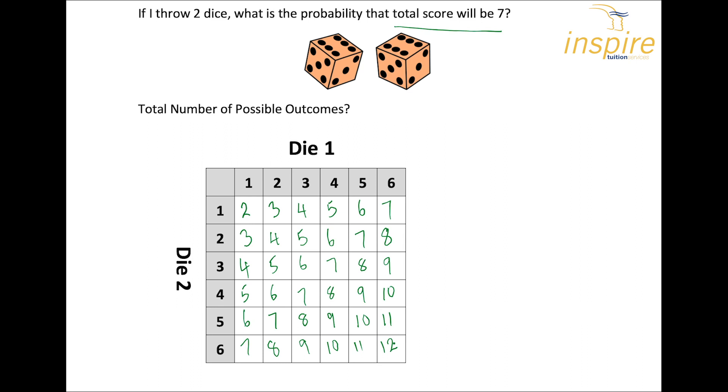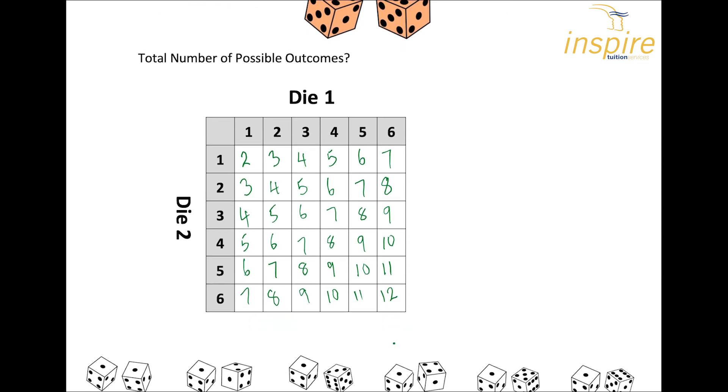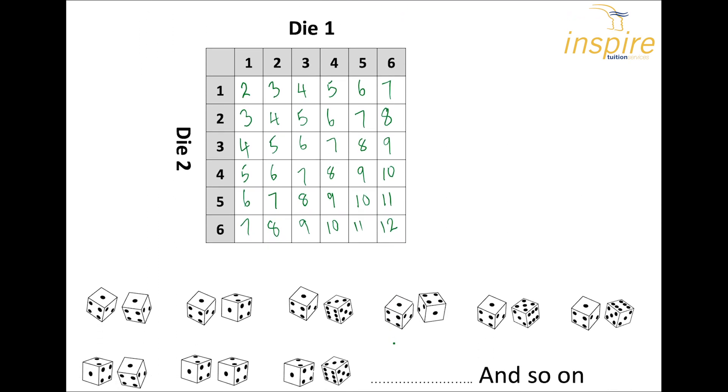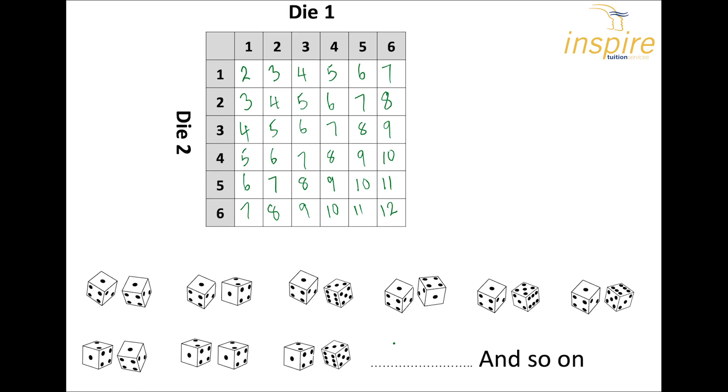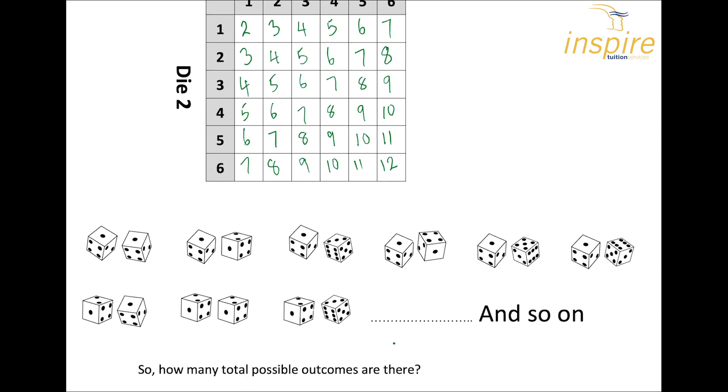All right, so there we are. We've filled out our grid. We can see what the totals would be. Now looking at our question, and I've again shown you some similar sort of things that I showed you earlier, where the different combinations are and how the dice would land. All right. So how many total possible outcomes? Well, we know now that would be 36 because there are two dice.